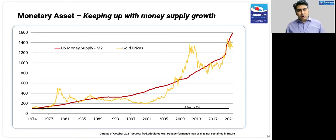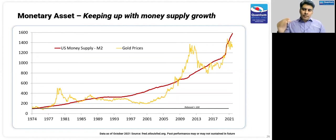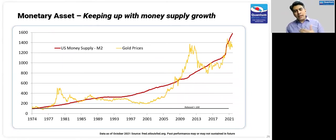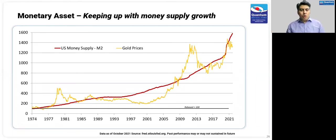One barometer suggesting gold prices are somewhat undervalued is the increase in money supply. Gold is a monetary asset; over long periods it has kept pace with the amount of money printed by central banks — shown by the red line. But the gold prices are below that red line today. If over a period of time gold as a monetary asset catches up to money supply, we will see higher gold prices. Supported by lower real rates and higher money supply, this should catch up over time. Overall, this makes us bullish on gold in the medium to long term.